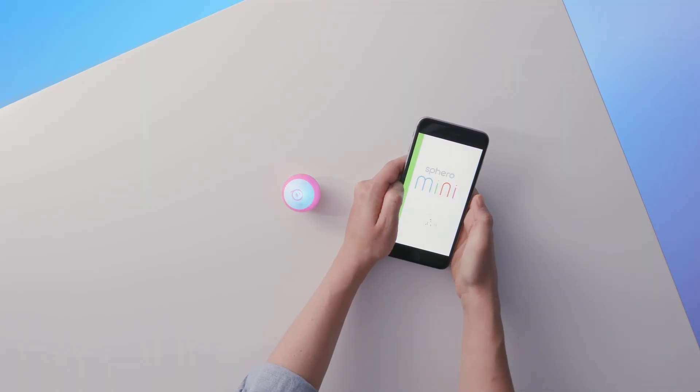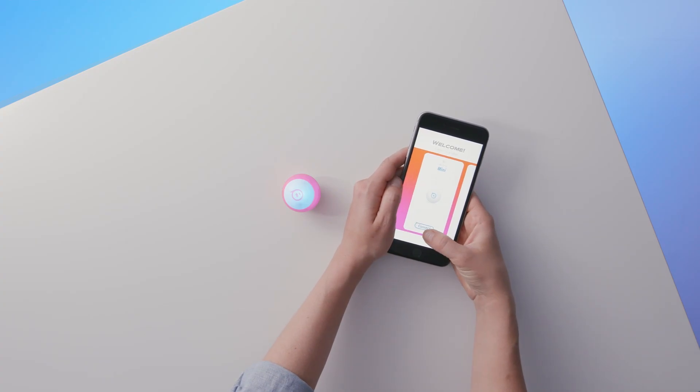Once through that, simply select your mini and tap connect. If you have multiple minis, you can match up the ID number at the top of the selection with the one on your packaging. You can also star your favorite mini so it's easy to connect to, or the mini closest to your device should be the first on the list.